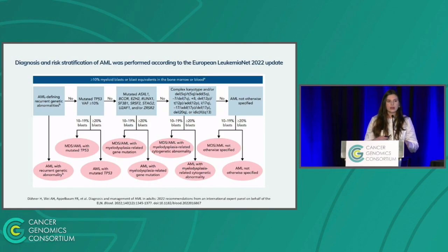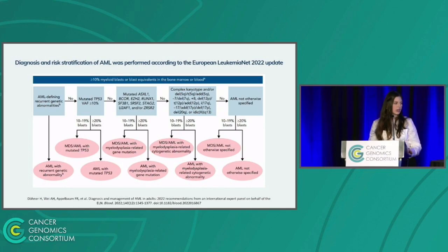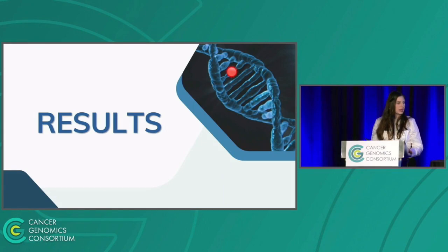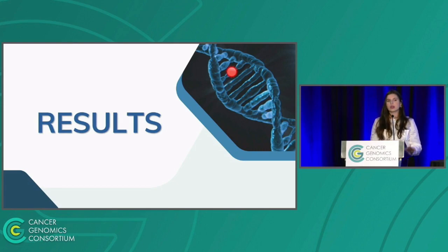After variant calling and gene fusion calling, for classification, risk stratification, and diagnosis, we used the ELN leukemia guidelines, last updated for AML samples. Here I will start showing some preliminary results, as this is still an ongoing study.